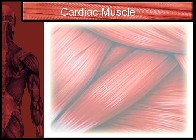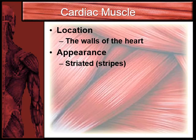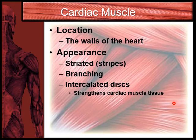Next is cardiac muscle. 'Cardi' means heart, so cardiac muscle is found in the walls of the heart — it's only found in the heart. The appearance is kind of like skeletal muscle but with branching portions. It also has something called intercalated discs, which is very important about cardiac muscle. These intercalated discs strengthen your cardiac muscle tissue — they're little discs found between cardiac muscle cells that help the heart work more effectively. Your heart has to pump and beat every day all day for your entire life, so those muscle cells have to work really well.